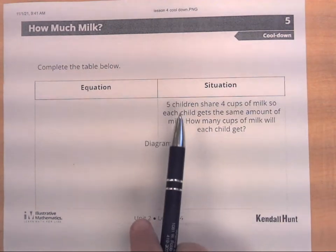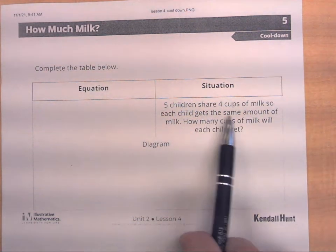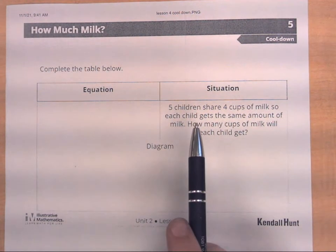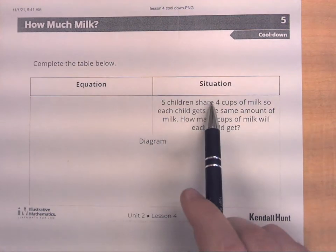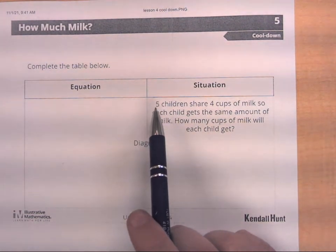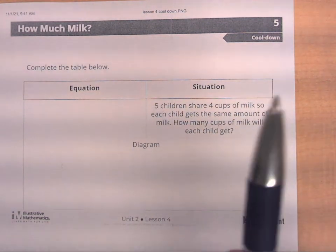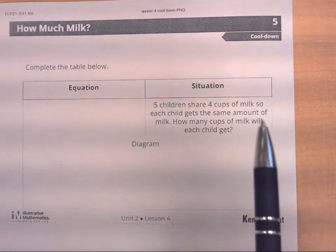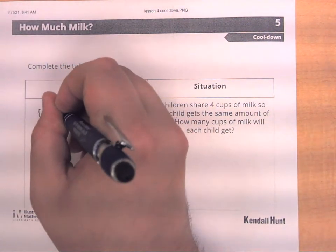Students were presented with this situation: five children share four cups of milk equally — how many cups of milk will each child get? By far the most popular wrong answer was five-fourths cups of milk. Many students did not read carefully; they saw five before four and assumed the equation is five divided by four. But that is not the case — the correct equation is four divided by five, because the four represents the cups of milk being divided.